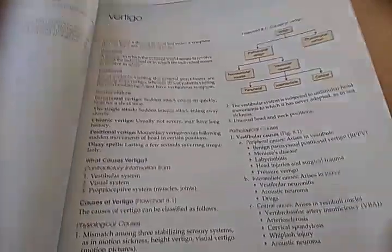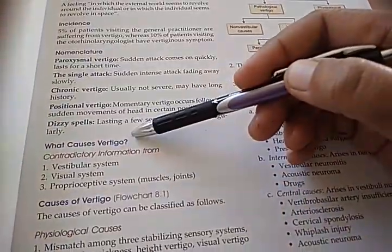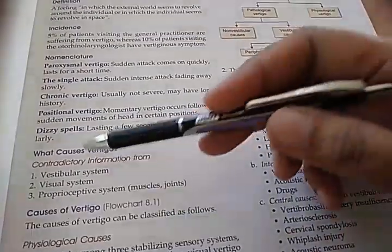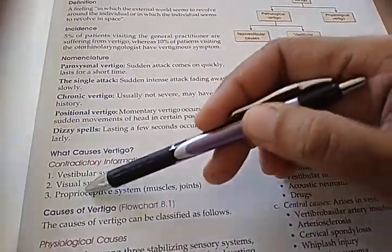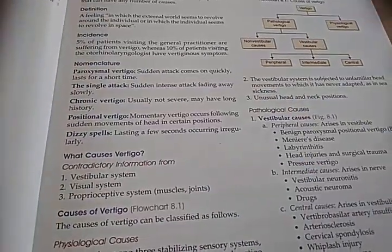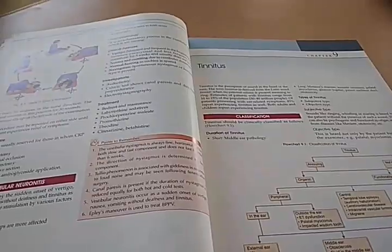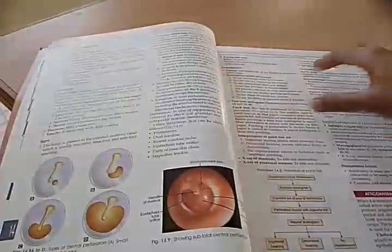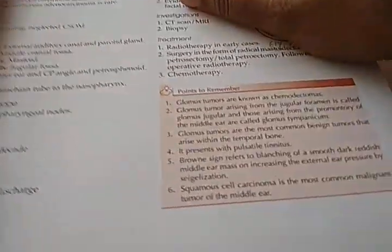We have moved on to vertigo. They have some question-and-answer type content: what causes vertigo? Contradictory information from the vestibular system, visual system, and proprioceptive system — all sending contradictory information to the brain. At the end of every chapter, they include some points to remember.